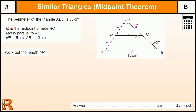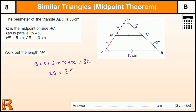So from there, we know that the perimeter is 30 centimetres, so 13 plus 5 plus 5 plus x plus x. We're trying to find MA, but MC is the same because M is the midpoint of AC, and that all adds up to 30. So we've got 23 plus 2x equals 30. Take away the 23, we get 7. Divide by 2, we get x = 3.5.